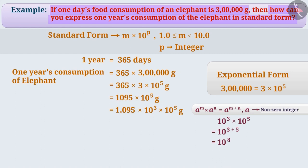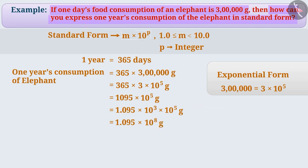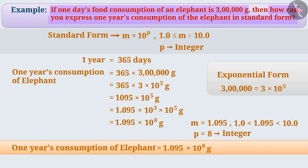Using this, we can say that one year's consumption of the elephant is equal to 1.095 into 10 to the power of 8 grams. Comparing this to m into 10 to the power of p, the value of m here is 1.095, which is greater than 1.0 but smaller than 10.0. Similarly, the value of p is 8, which is an integer. Thus, by finding out one year's consumption of the elephant, we have expressed it in standard form.